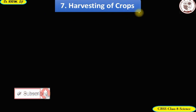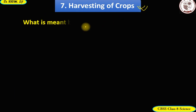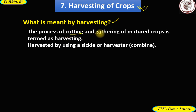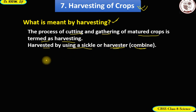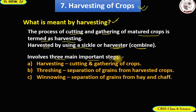Moving on to harvesting of crops. Harvesting is the process of cutting and gathering of matured crops. Crops are harvested either manually using a sickle or by a machine called a harvester, also called a combine. Harvesting actually involves three main steps: first, harvesting itself — cutting and gathering of crops; second, threshing — separation of grains from harvested crops; and third, winnowing — separation of grains from hay and chaff.